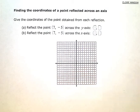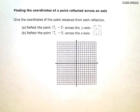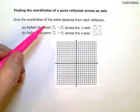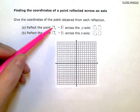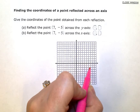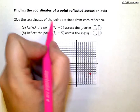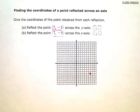Finding the coordinates of a point reflected across an axis. I'm going to reflect the point (7, -5) across the y-axis. First, I'll plot my original point: 7 over — 1, 2, 3, 4, 5, 6, 7 — and 5 down — 1, 2, 3, 4, 5. That's my original point.